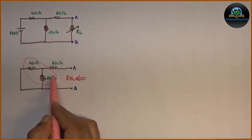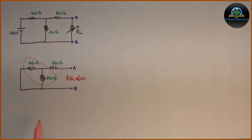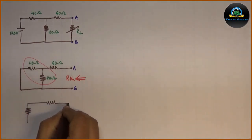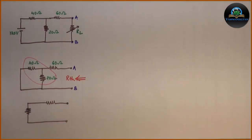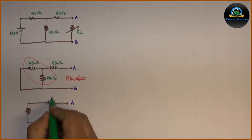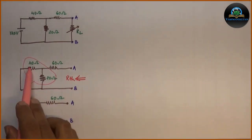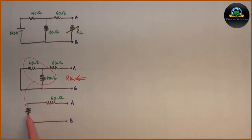Hence, these two resistances can be converted into single resistances. So our circuit will modify further. The value of parallel combination of 40 ohm and 20 ohm will be this resistor, and the value is 13.33 ohm.